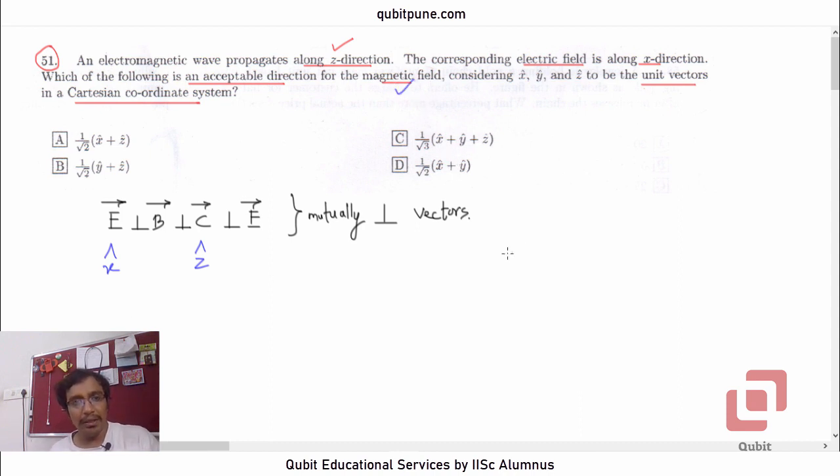Note that another relationship connects E, B, and C directions: the cross product of electric field and magnetic field gives us the direction of propagation of the electromagnetic wave.